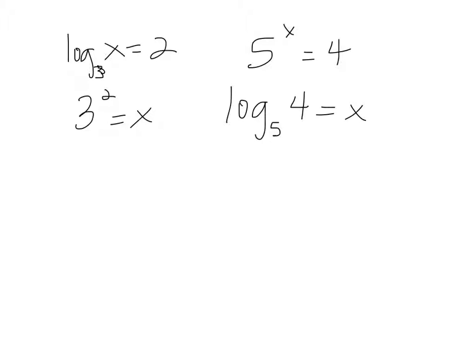So the key to doing this is always, whatever your base of your logarithm is ends up being the base of the exponent. So it's 3 raised to the other side of the equation equals what's left, the x. So 5 to the x is equal to 4.